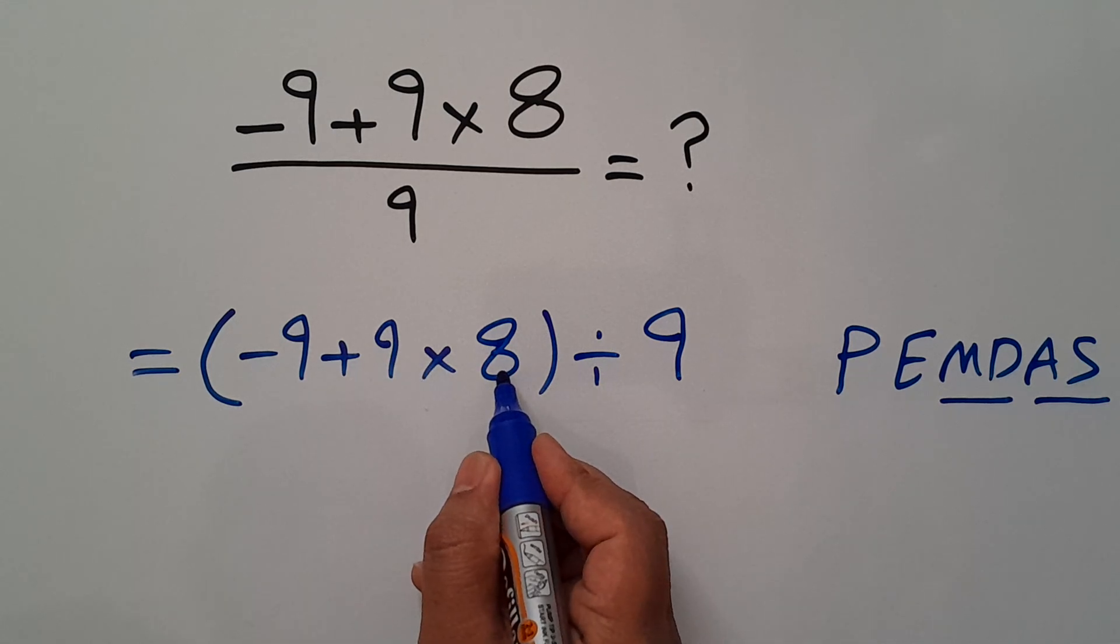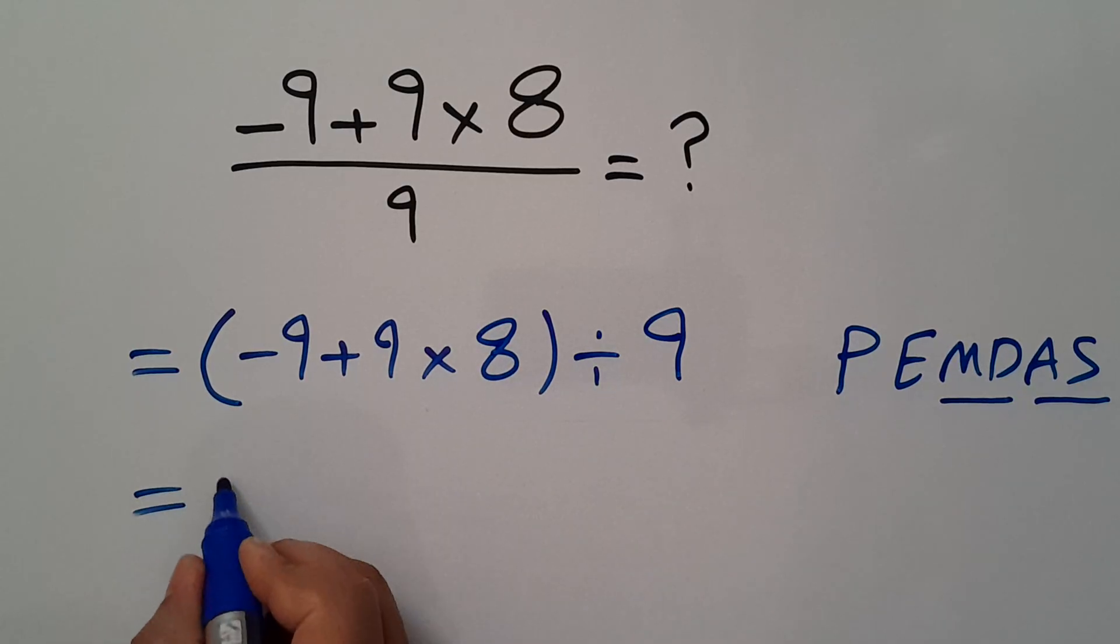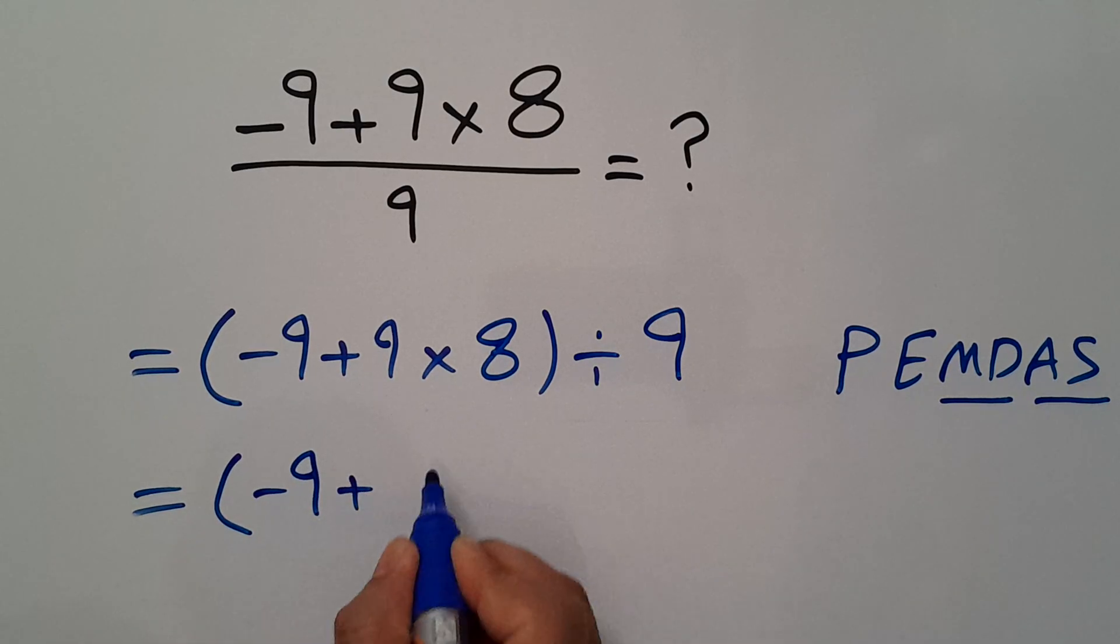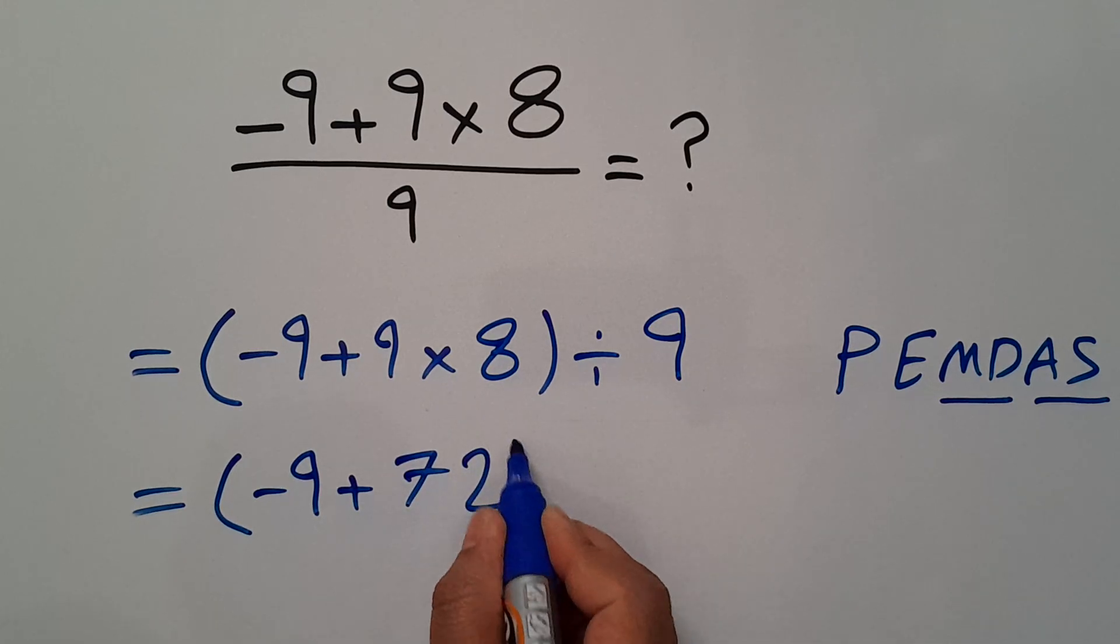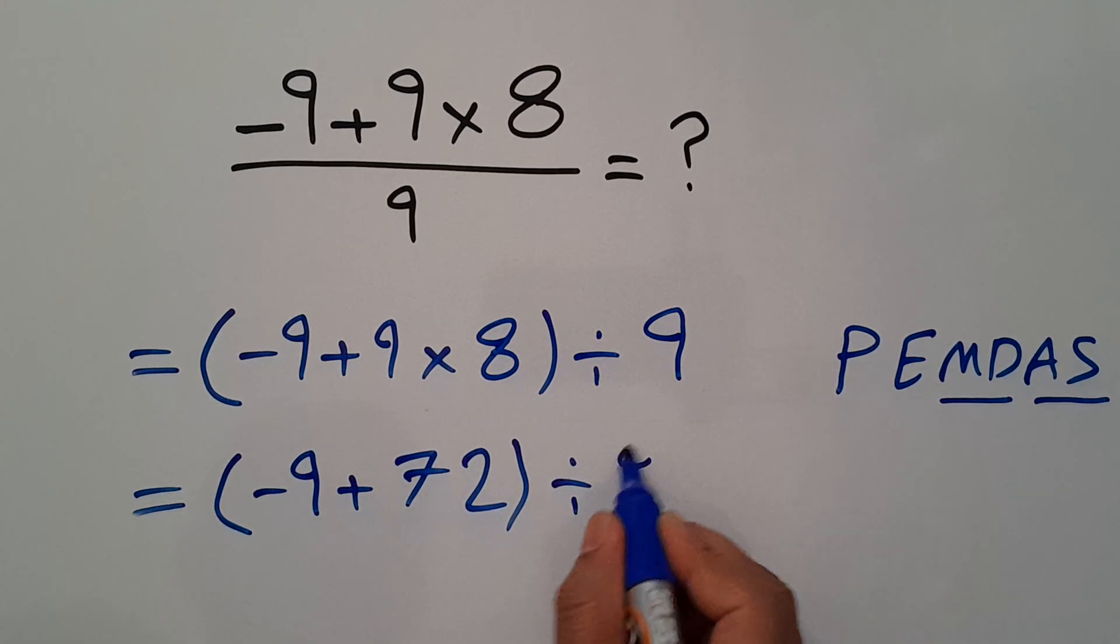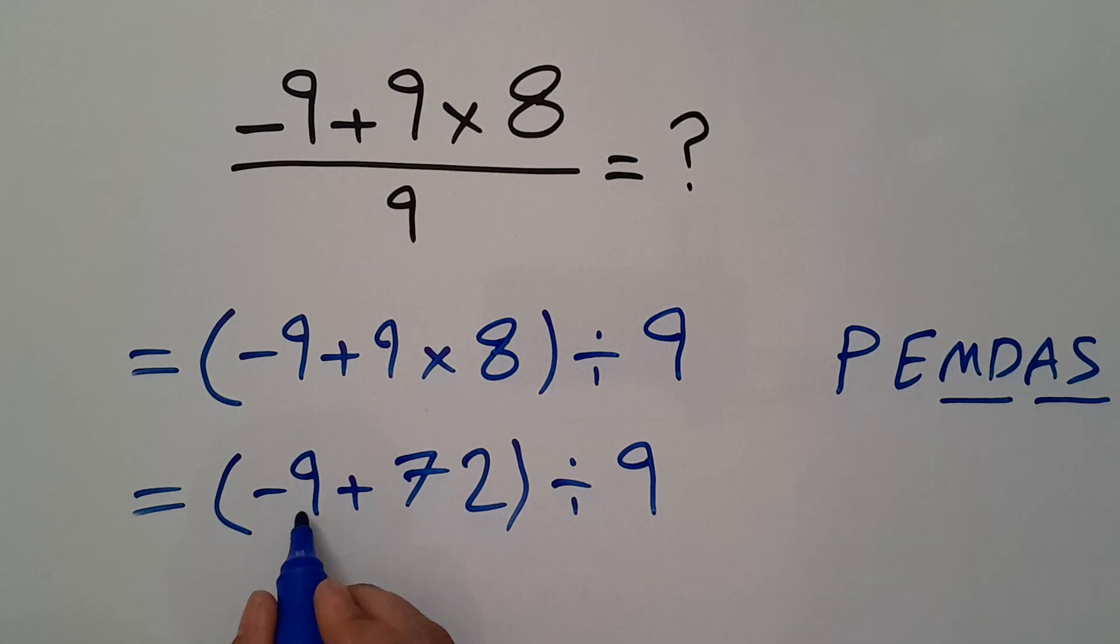Negative 9 plus 72 equals 63. So 63 divided by 9 equals 7. Our final answer to this problem is 7.